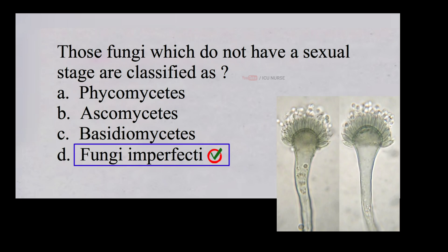Fungi Imperfecti, also known as Deuteromycota, are fungi that don't have a known sexual state in their life cycle. They are classified as second class fungi and are commonly called molds.